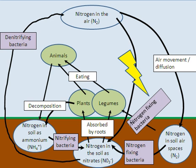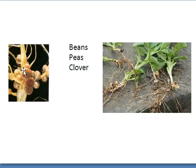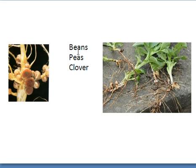Legumes is a term given to certain types of plants which have root nodules — little nodules on the roots that actually contain nitrogen-fixing bacteria. They are kept there by the plant to directly convert nitrogen gas into nitrates for the plant. Examples are beans, peas, and clover. So they're very good for getting nitrogen from the air to the plant.